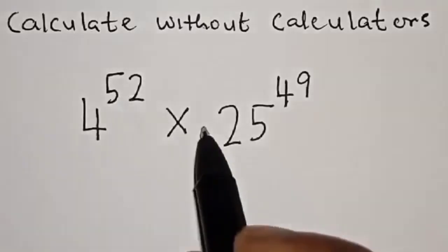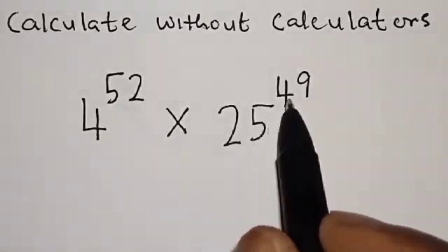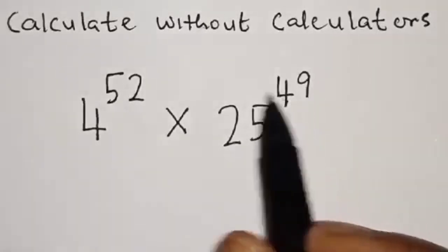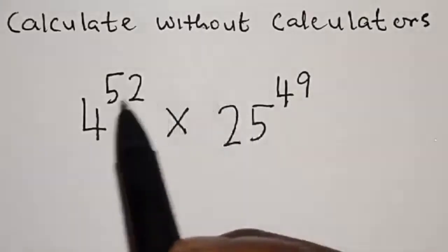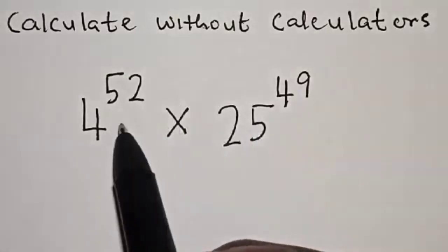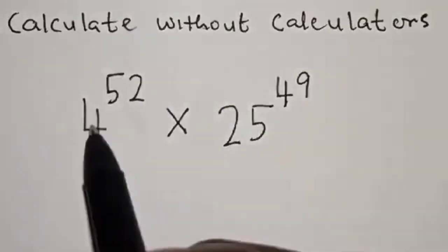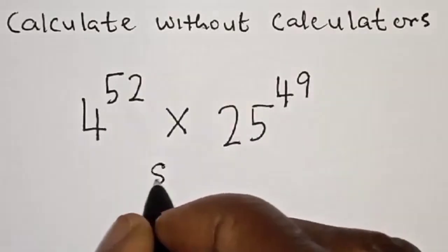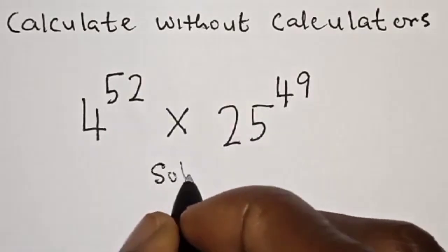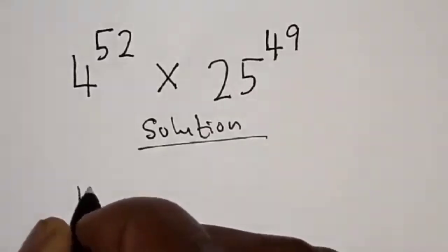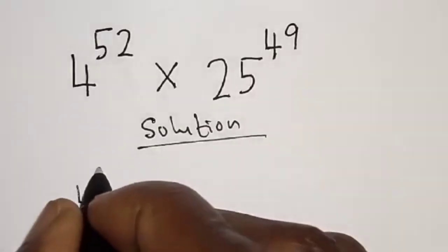4 raised to power 52 multiplied by 25 raised to power 49 — we quickly want to calculate this without using a calculator. Solution: 4 raised to power 52 multiplied by 25 raised to power 49.